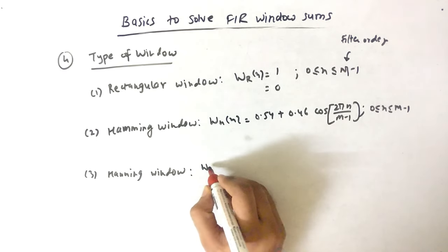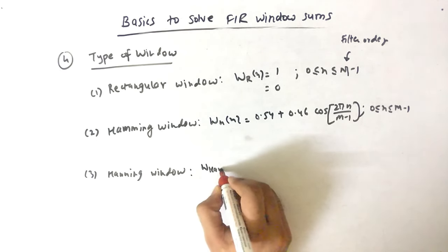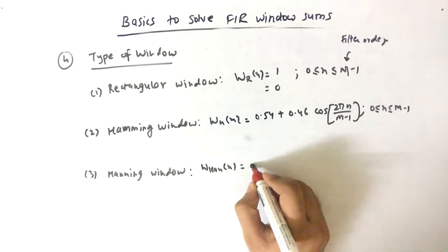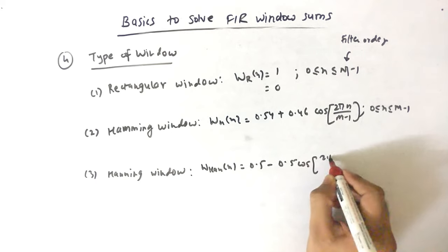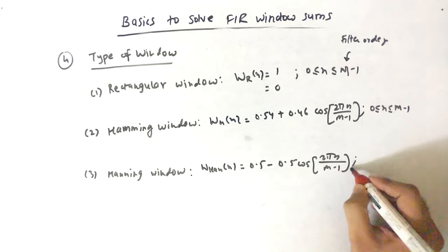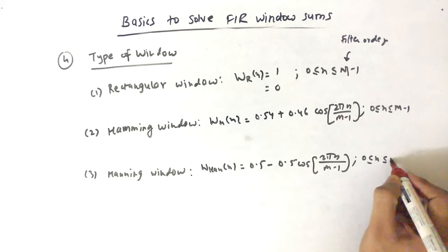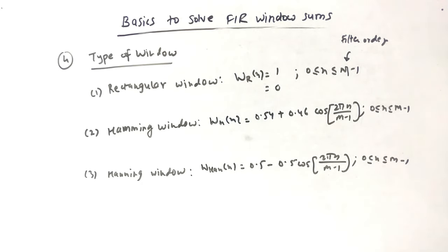Whereas Hanning says W of N is equal to 0.5 minus 0.5 cosine of 2 pi N upon M-1, and again the range is same. You can see the values 0.5, 0.46 and the signs. This is very important. So basically we have 3 types of window and they are used to convert an Infinite impulse response to a Finite impulse response using window.